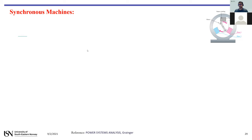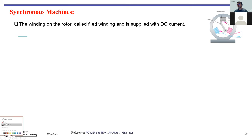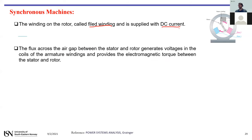In a synchronous machine, the winding on the rotor is called field winding, and it's supplied by a DC voltage and DC current source. The flux that crosses the air gap — the air gap being the space between the stator and the rotor — generates an induced voltage in the armature coil.